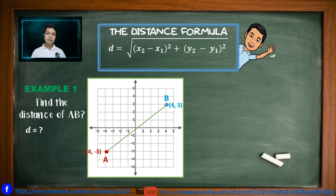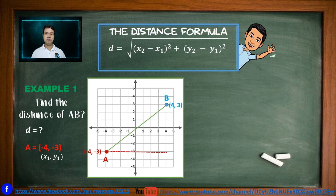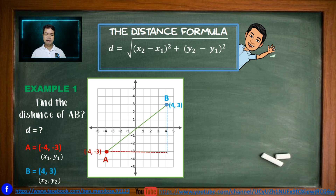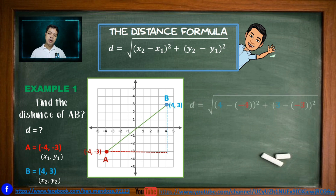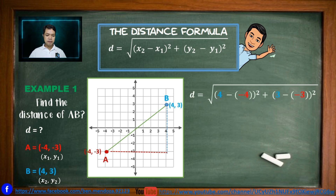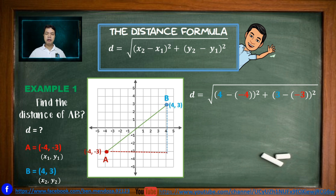We assign point A as our first point, so we have x₁, y₁ as negative 4, negative 3. Then B is the second point with coordinate x₂, y₂. Applying the formula, we have (x₂ minus x₁) squared, so that becomes (4 minus negative 4) squared, plus (y₂ minus y₁) squared, so that becomes (3 minus negative 3) squared.